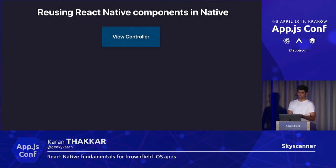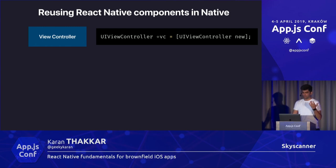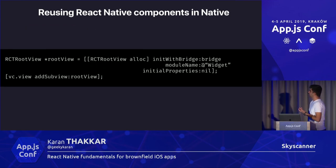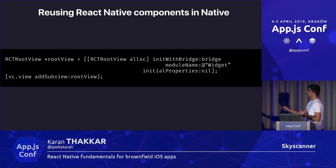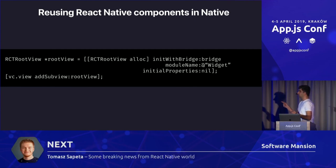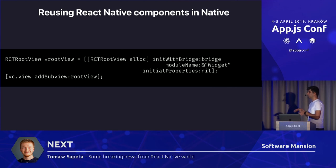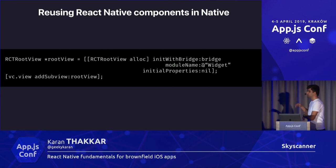So how does that work? We know every screen is controlled by a view controller with a property called view. The difference from before is that in our previous step we replaced the view property of the view controller entirely with our React Native view. In this case, we don't replace the view — we actually append to the existing view hierarchy. In web terms it's like doing element.appendChild. You maintain the existing hierarchy and add your React Native view to it, essentially telling the view controller: you managed these six views before, now you're going to manage me as well.